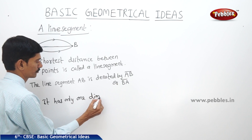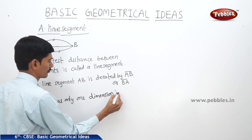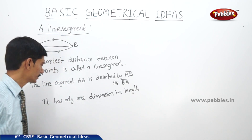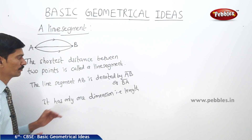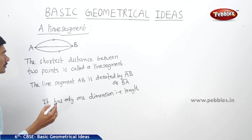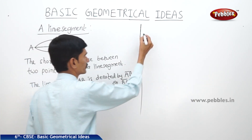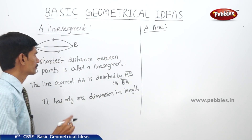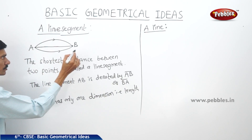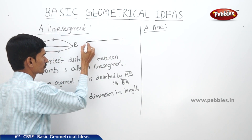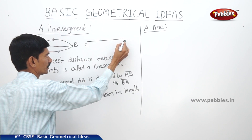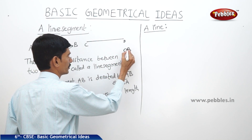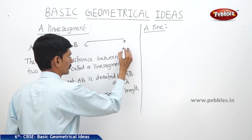A line segment has only one dimension, which is length. It has no breadth or height. A point has no dimensions at all. To determine a line segment we need two points — for example, points C and D including the endpoints. This line segment is represented by CD or DC.